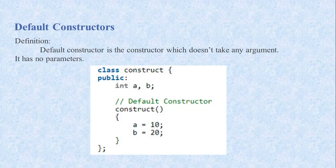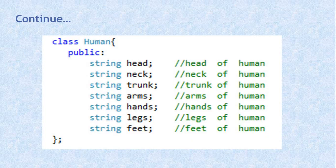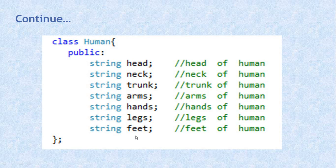As a practical example, consider a 'Human' class. The Human class has approximately 7 member objects. For example, the head has move functionality, the neck has its own functionality. Based on this, we can define different operations. Similarly, we can define functionality for arms, hands, legs, and feet. If we apply specific related functions to these, it will become a complete class.